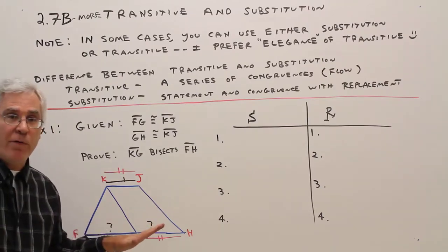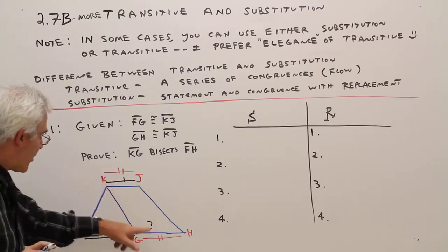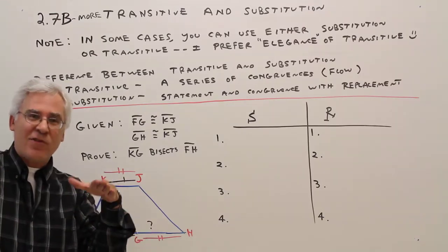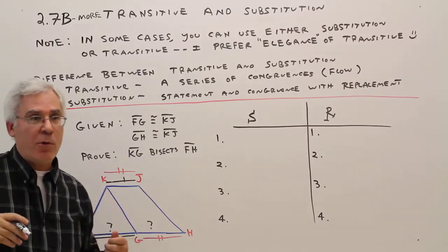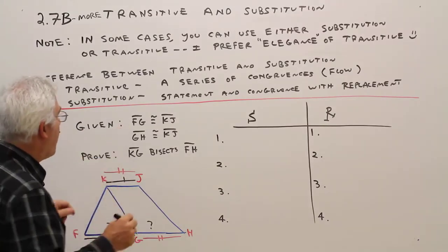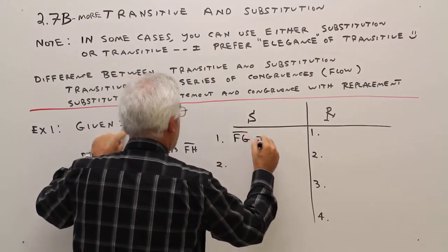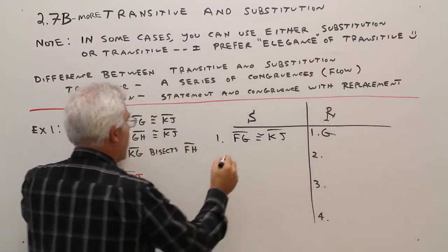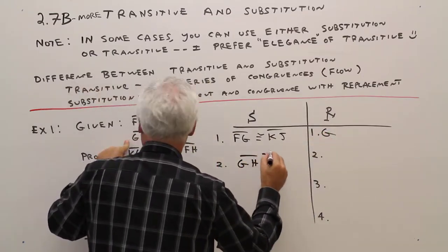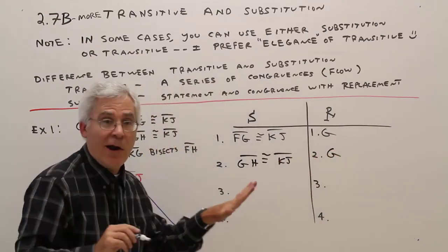Once I do it, game over. Well, if you're congruent to you and you're congruent to you, it looks like I'm going to have that series of congruences and use transitive. Let me show you how it works in a proof. Step 1, I'll just write this given: FG is congruent to KJ, given. GH is congruent to KJ, given.